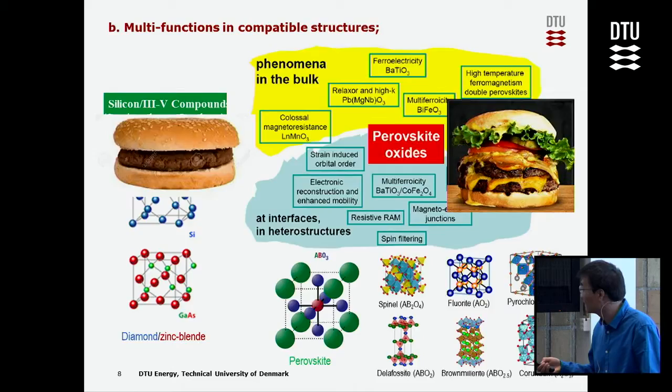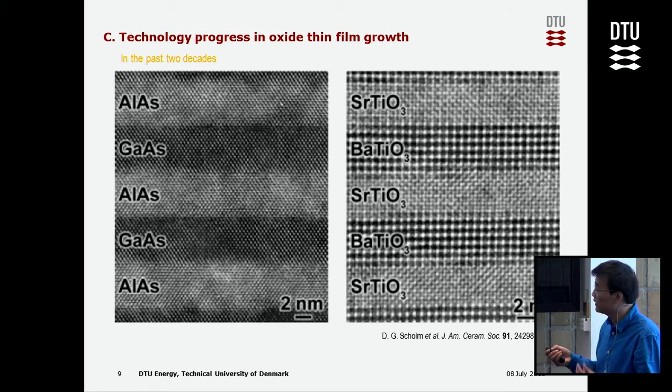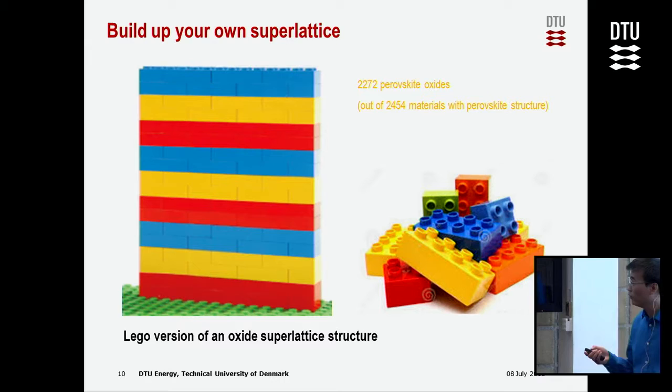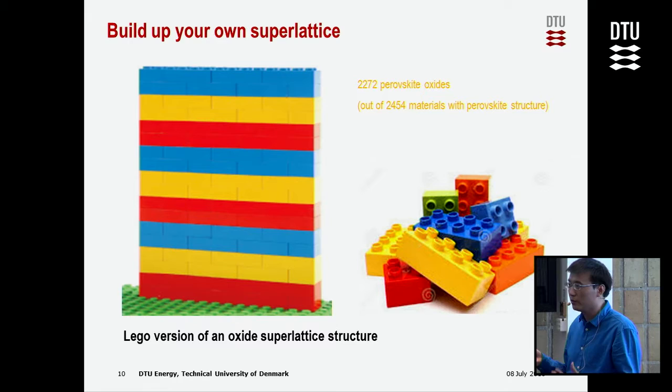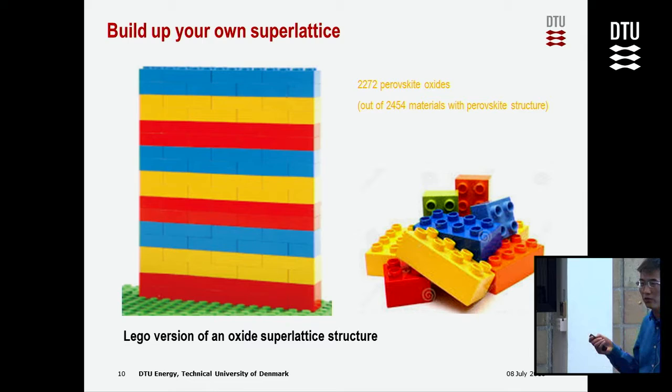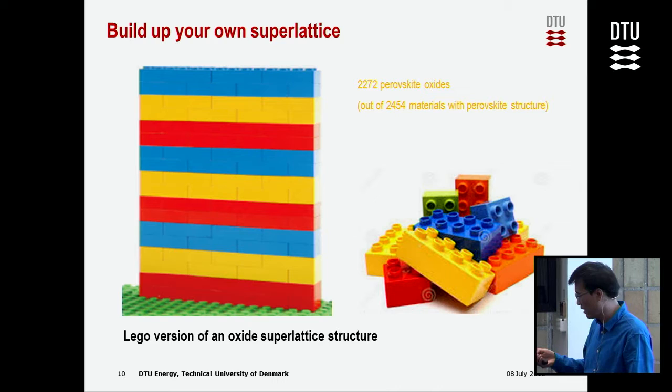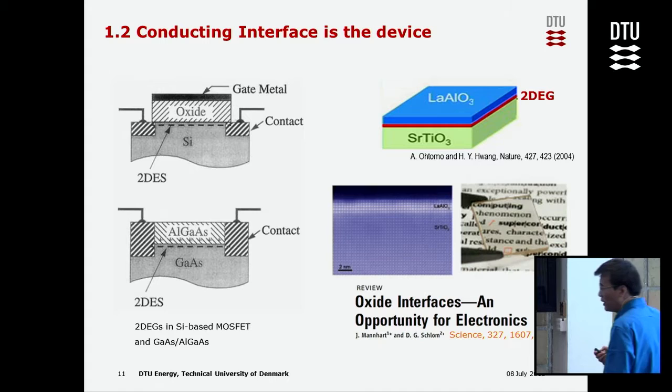Thanks to recent technology progress, we can now grow oxides in superlattices as well as semiconductors. There are more than around 2,300 perovskite oxides with almost every function, so basically you can grow any device you want.